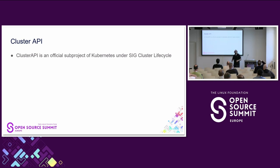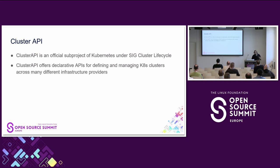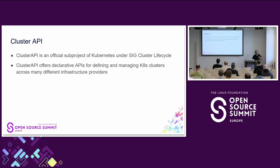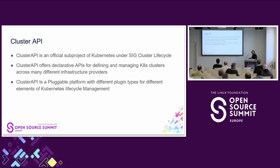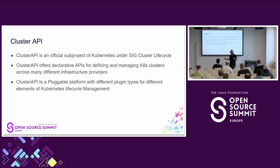Cluster API is an official sub-project of Kubernetes, part of the Special Interest Group for Cluster Lifecycle. It offers declarative APIs using Kubernetes CRDs that allow us to define and manage Kubernetes clusters across many different infrastructures, using many different distributions of Kubernetes, different bootstrapping mechanisms, in a unified and manageable way. Cluster API is a pluggable platform with different plugin types called providers: infrastructure providers, bootstrap providers, control plane providers, IPAM providers, and add-on providers.